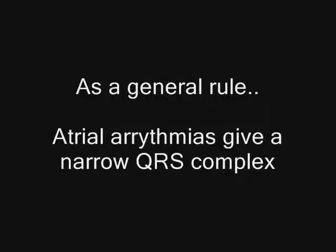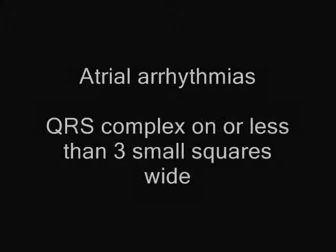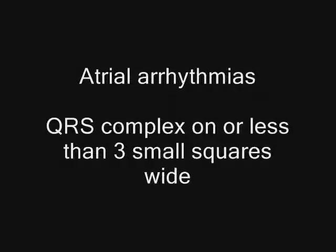As a general rule, an atrial arrhythmia will give you a narrow QRS complex. That is, at its widest point, it's on or less than three small squares wide.